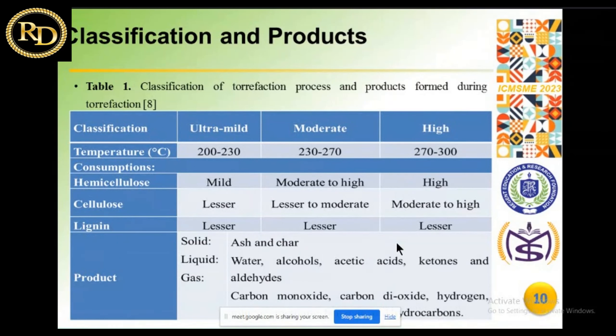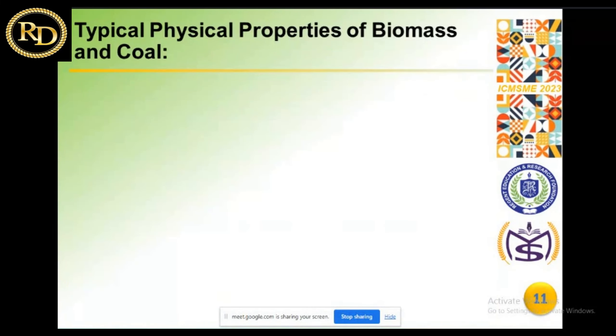This is the classification of torrification products. Some researchers have worked under ultra-mild conditions, some under moderate conditions, and some under high conditions, obtaining different product values at each level.